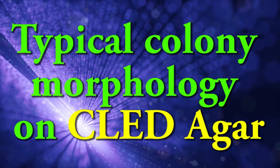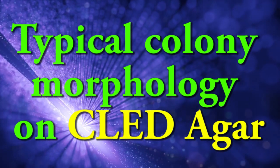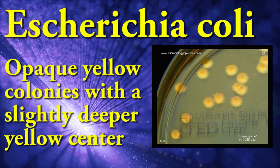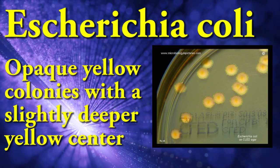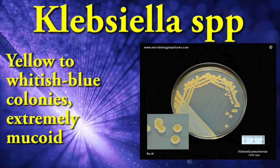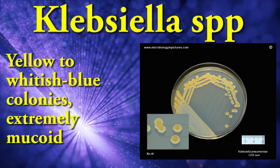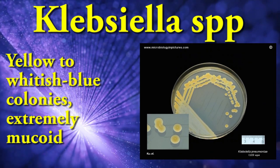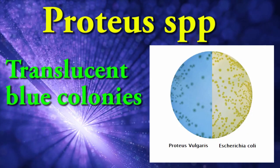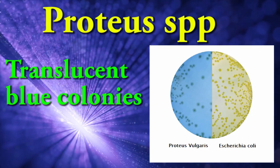Typical colony morphology on CLED agar: E. coli produces opaque yellow colonies with a slightly deeper yellow center. Klebsiella species produce yellow to blue-white colonies that are extremely mucoid. Proteus species produce translucent blue colonies.